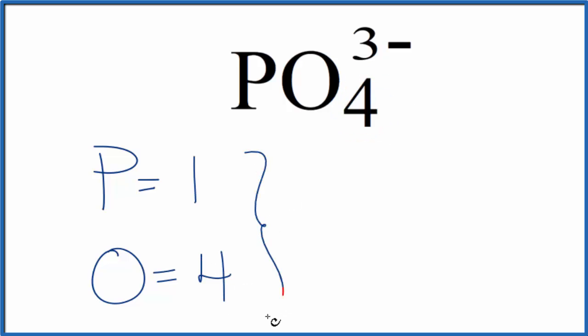So we have a total of five atoms for PO4 3 minus, the phosphate ion. This 3 minus up here, what this means is that we have three extra electrons. That's what makes this an ion. We have a charge. In this case it's an anion because we have a negative charge.